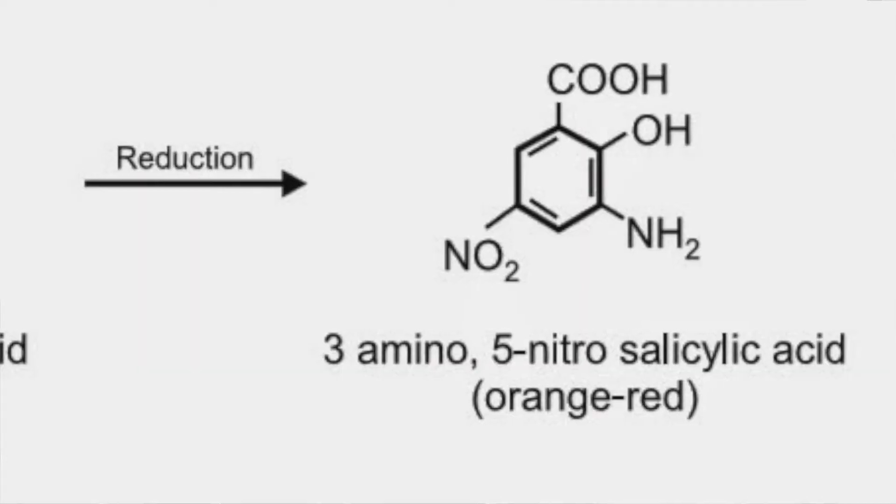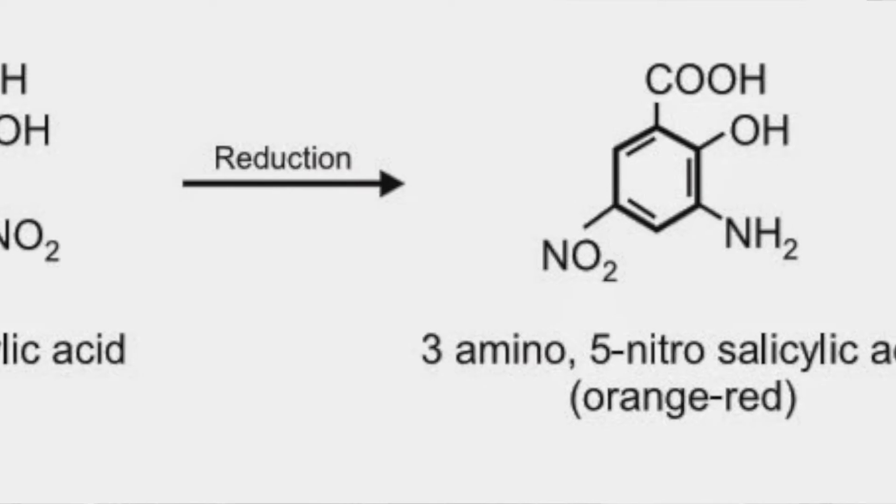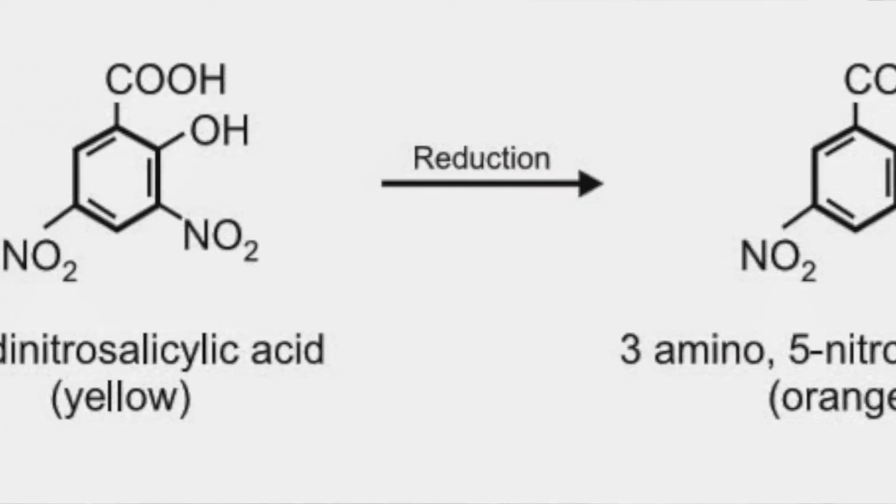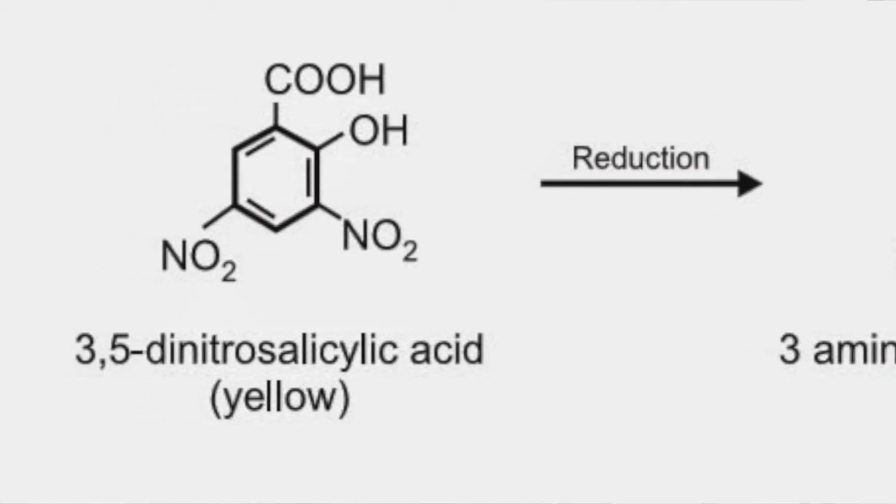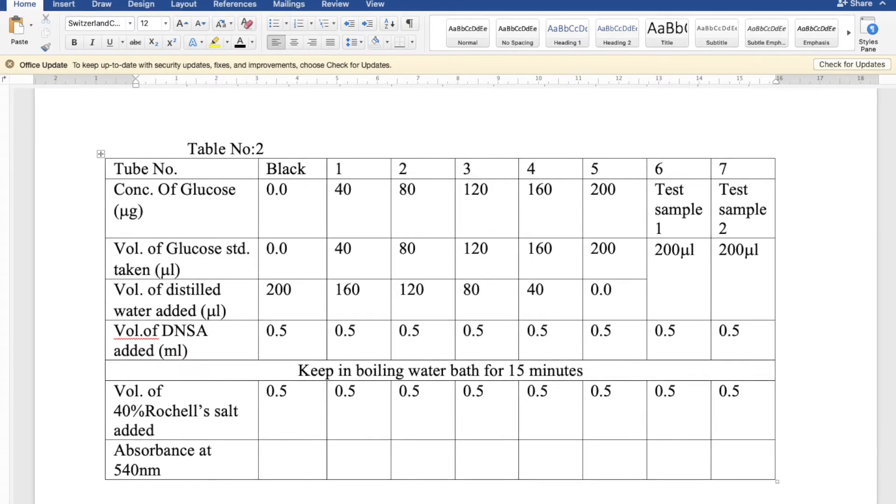During the reaction, DNS — 3,5-dinitrosalicylic acid — under alkaline conditions gets reduced to a colored compound that is reddish-brown in color. We measure the optical density (OD) using a spectrophotometer at 540 nanometers. The chemicals required are: sodium potassium tartrate (to provide alkaline conditions), 3,5-dinitrosalicylic acid (DNS), 2 molar NaOH, and a standard sugar solution. Compositions will be provided in the description box.